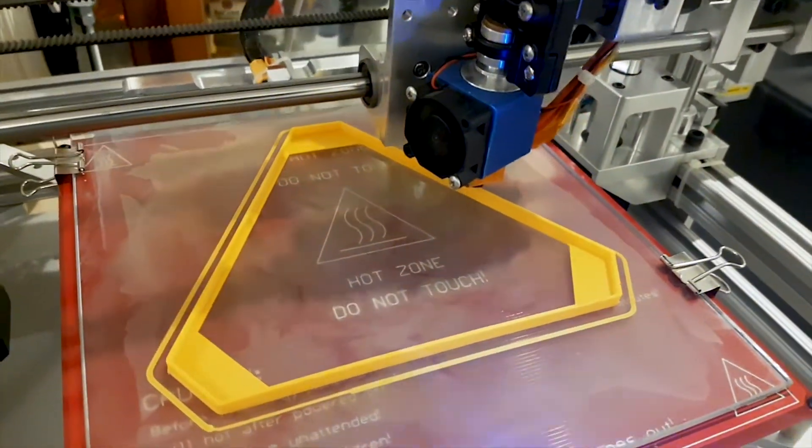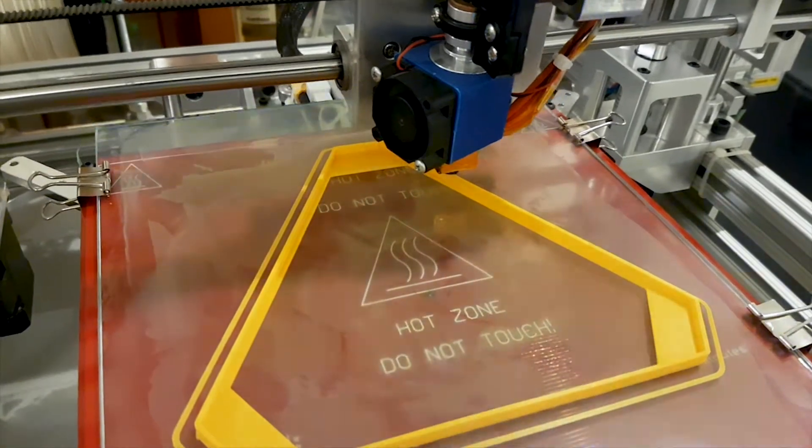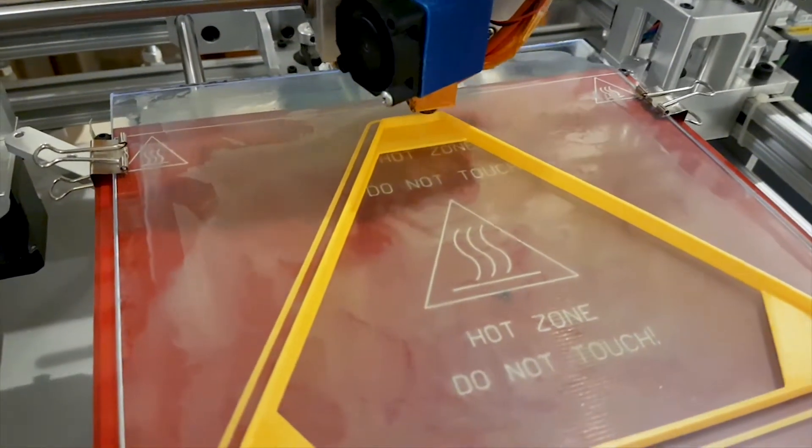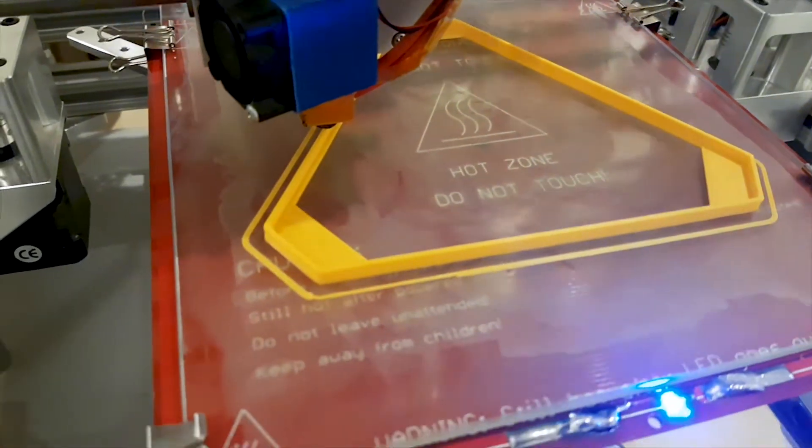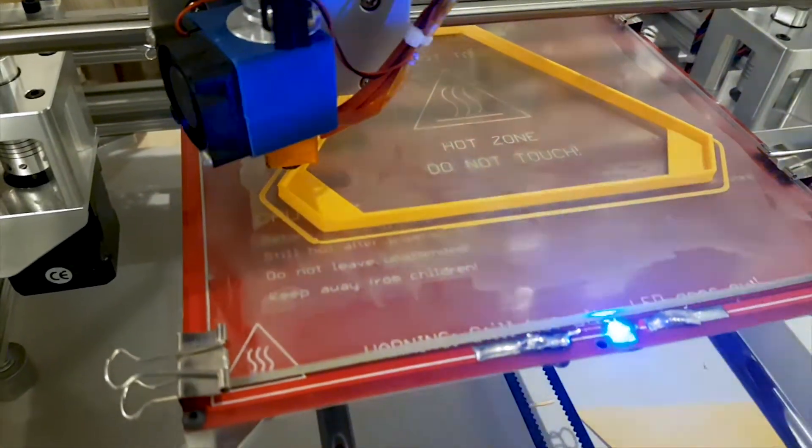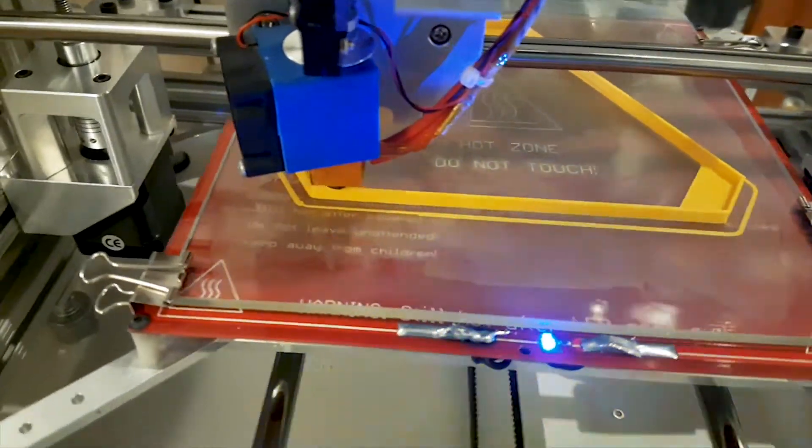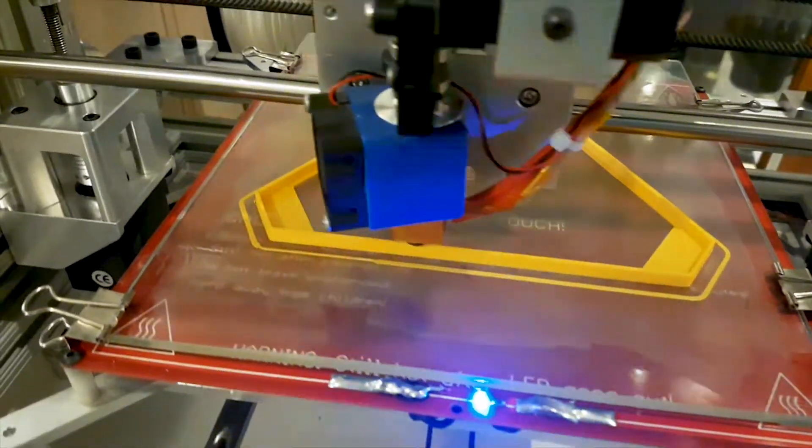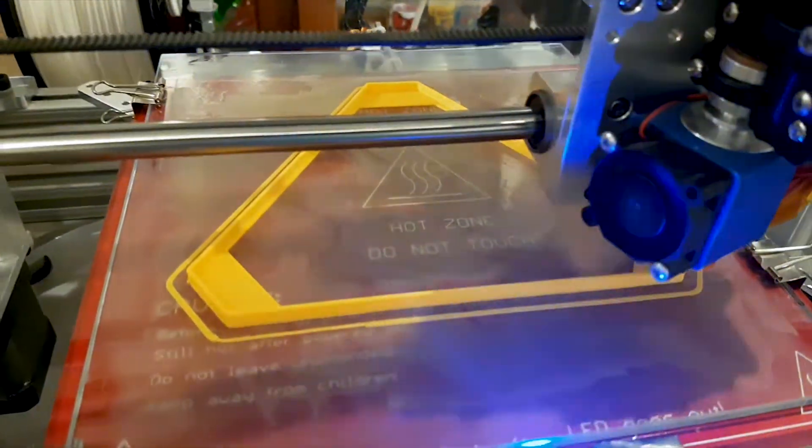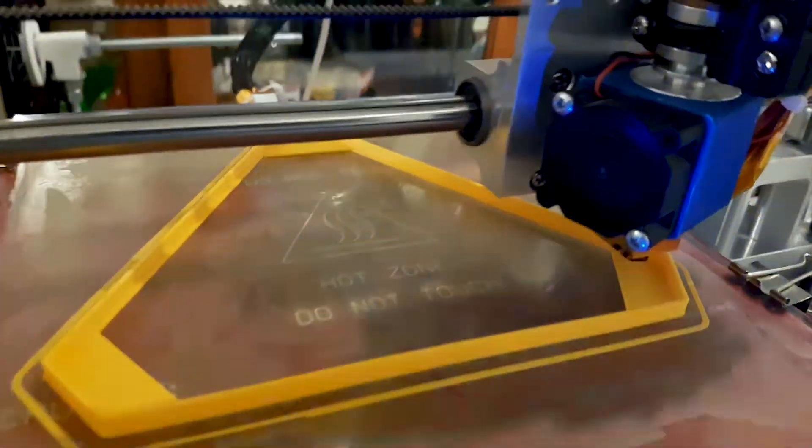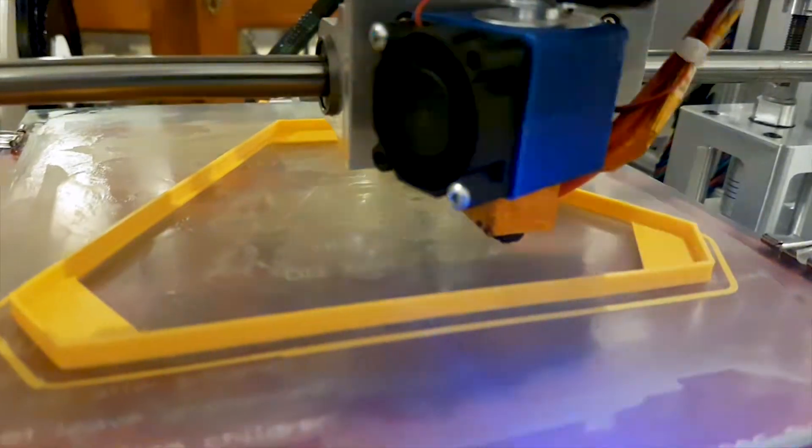And as mentioned before, hairspray is also terrible for your print—not terrible for your print, but terrible smell for your 3D printer. Basically, if you don't like the smell, I think it's best for you to use wood glue and just water. So the print is finished now.